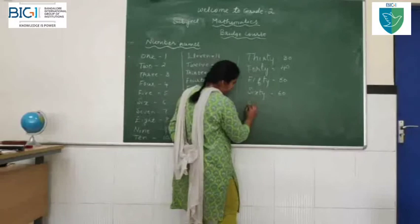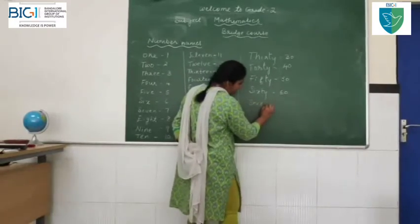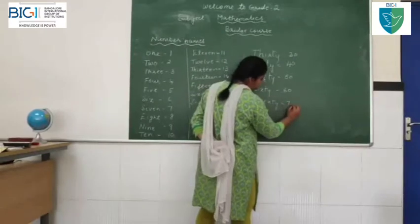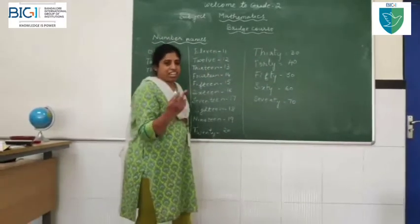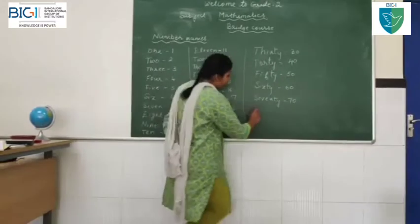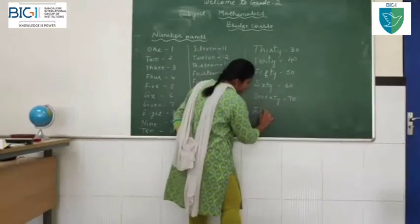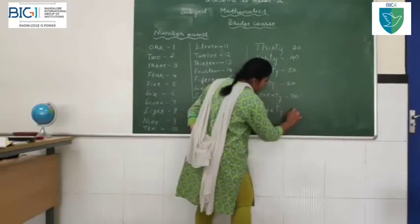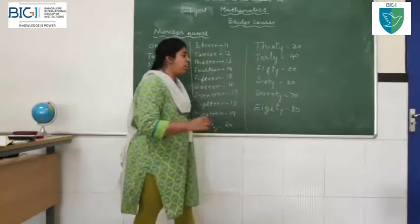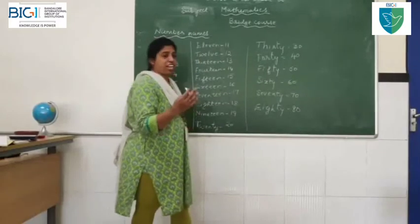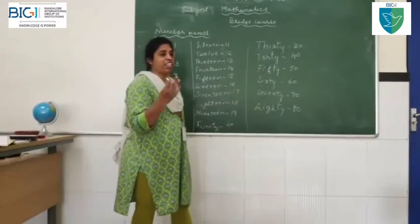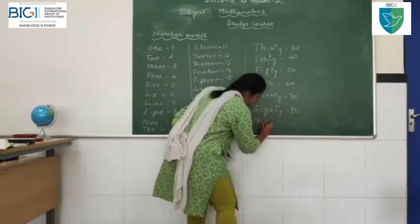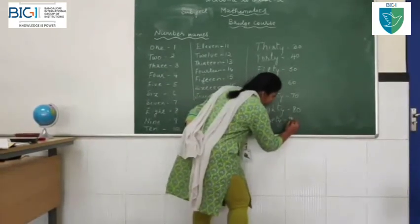70: S-E-V-E-N-T-Y. 80: E-I-G-H-T-Y. To all know the spelling of 9 — N-I-N-E-T-Y, you have to add T-Y. 90: N-I-N-E-T-Y.